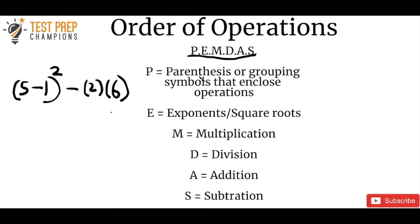PEMDAS stands for: P is parentheses, E is for exponents or square roots, M is for multiplication, D is for division, A is for addition, and S is for subtraction. Another way to remember PEMDAS is 'please excuse my dear Aunt Sally.' It sounds silly, but that's an old school method for remembering this, or you can just remember it as PEMDAS — whatever works.